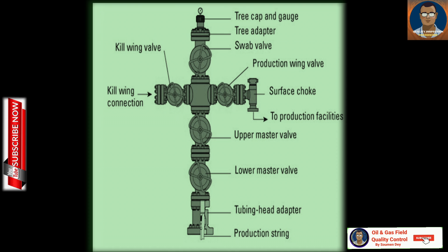Fifth: Lower Master Valve. The lower master valve is another primary isolation valve with functionality similar to the upper master valve. It provides redundancy, ensuring a backup is available to shut off the well. If the upper master valve fails for some reason, the lower master valve will provide protection. Having both upper and lower master valves gives operators more flexibility and enhances safety measures.